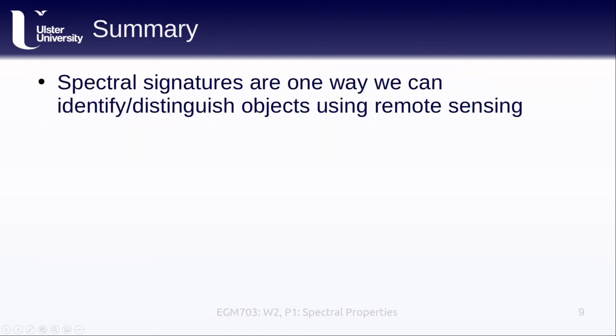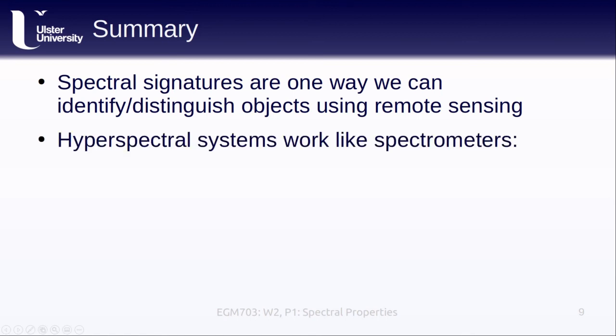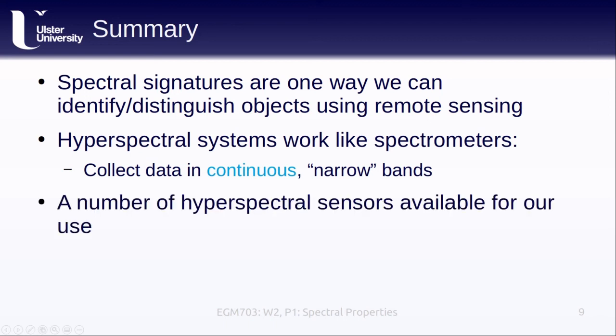In this lesson, we've reviewed how we can use spectral properties and signatures to help identify or distinguish objects and surfaces using remote sensing. We discussed how hyperspectral systems work like spectrometers. They collect data in continuous, narrow bands, which means that we can use hyperspectral images to directly identify surfaces by comparing the data that we acquire to known spectral signatures. And finally, there are a number of hyperspectral sensors with data available for us to use, even if we don't have access to our own hyperspectral camera.